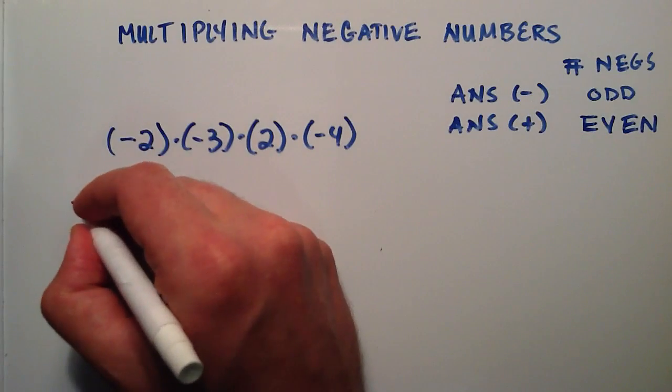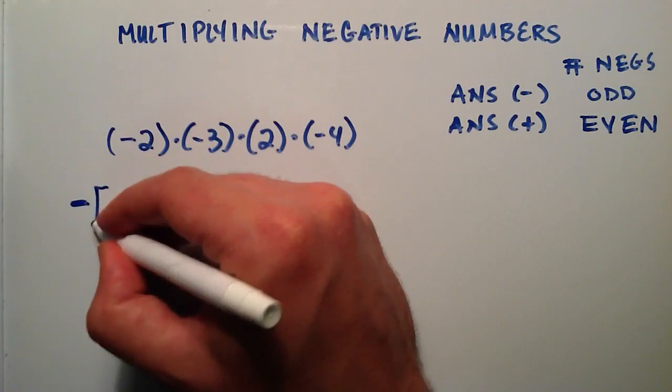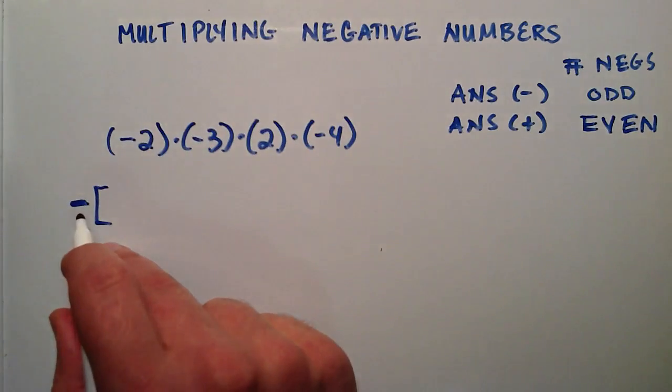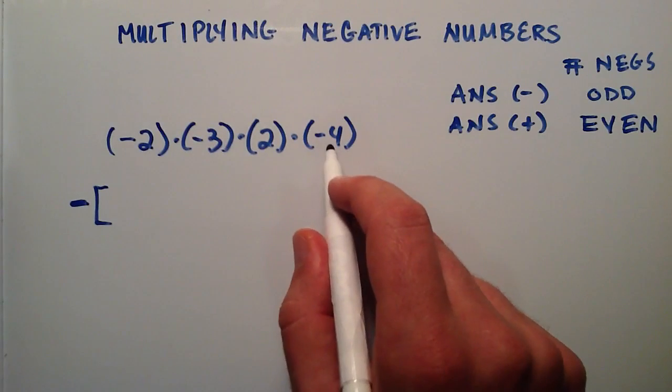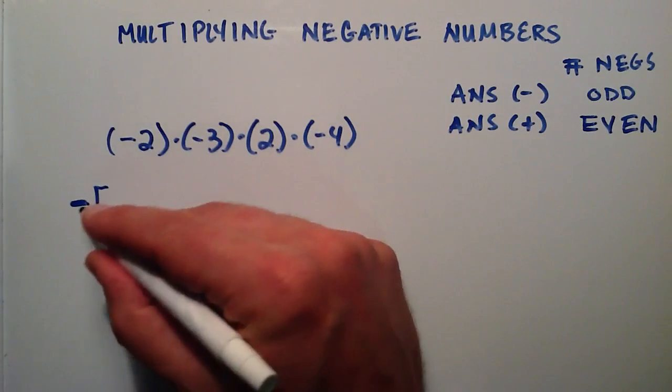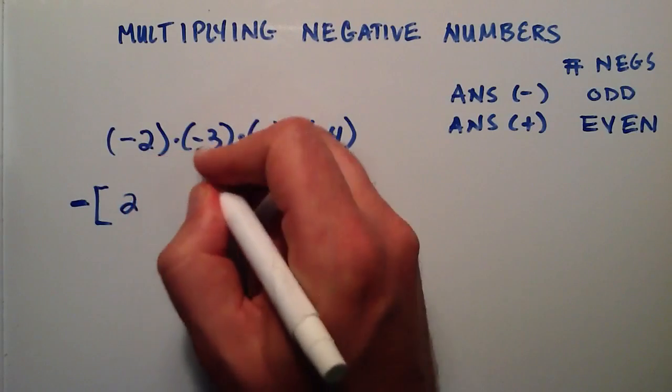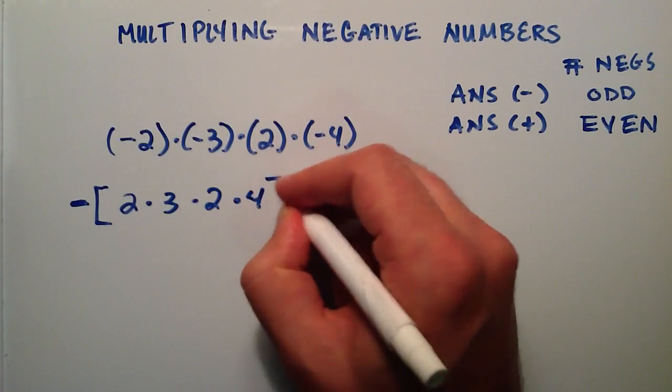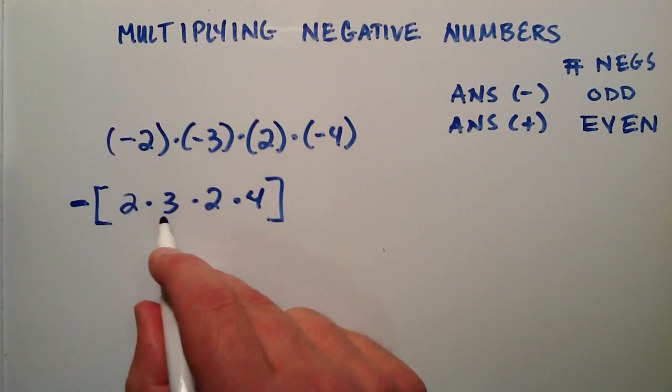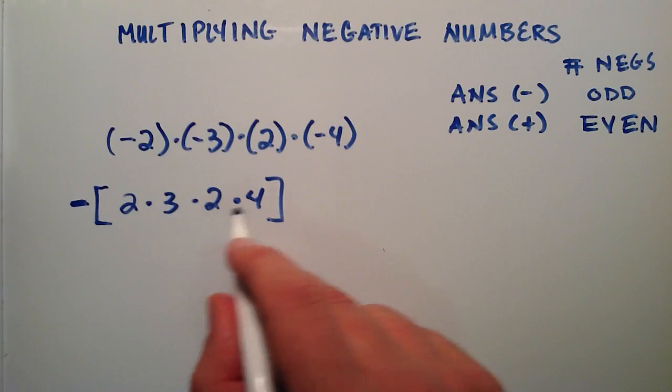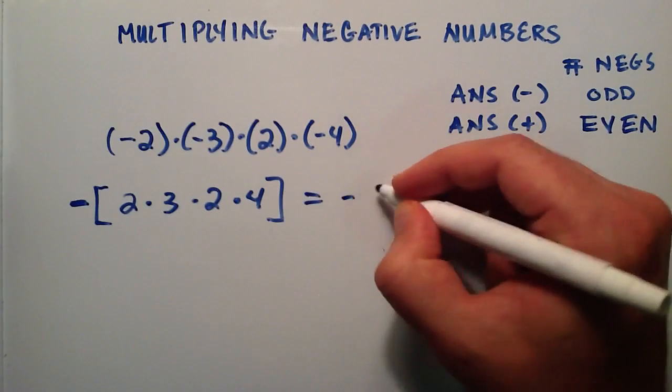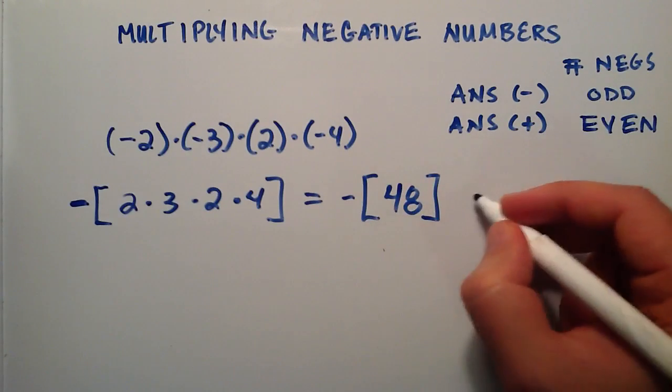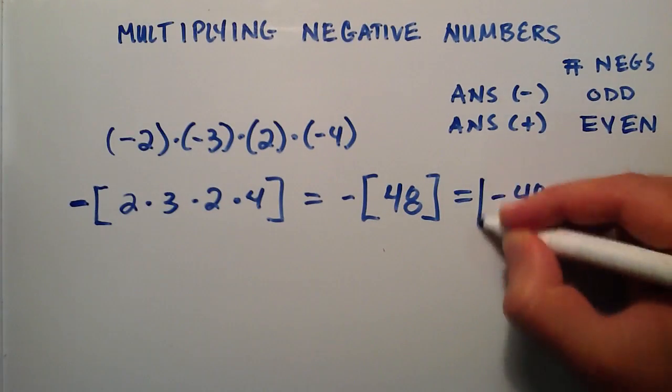So with that in mind, we can simply write a negative out here, and we can multiply these numbers together as if they were all positive. We've already determined our answer will be negative because we have an odd number of negatives. So we simply just go 2 times 3 times 2 times 4. 2 times 3 is 6, 6 times 2 is 12, 12 times 4 is 48. So leaving our negative out front, we simply have negative 48.